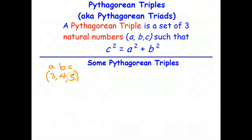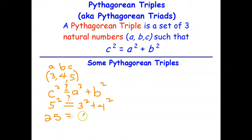So let's just check to see if this actually is a Pythagorean triad. We write the Pythagorean theorem, c² = a² + b². Now because we're not sure yet, we put a question mark above the equal sign. We replace c with five, we replace a with three, and b with four.